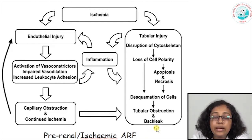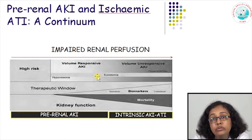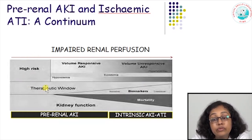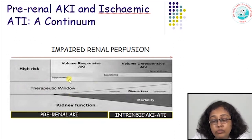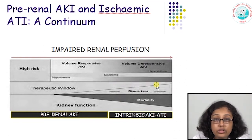Any cause of pre-renal AKI, if prolonged for a sufficient period, can lead to acute tubular injury and even acute tubular necrosis. A patient at high risk of ischemic acute tubular injury may initially have pre-renal AKI and respond to volume correction, but if this is not addressed at the appropriate time, tubular injury and tubular necrosis set in — and at this point the patient has volume-unresponsive acute kidney injury. It is a continuous spectrum; it all depends on the stage at which the patient is diagnosed and whether intervention has occurred.